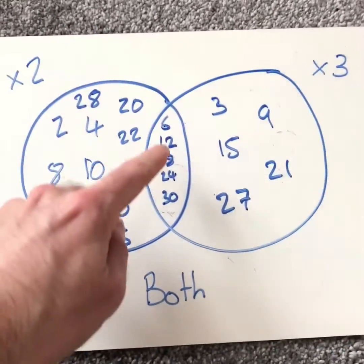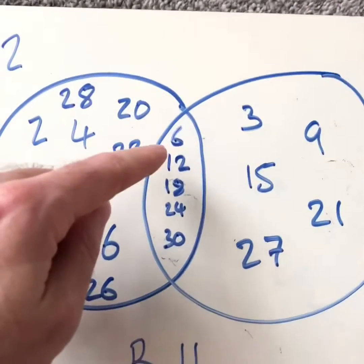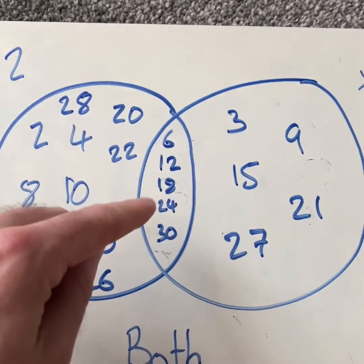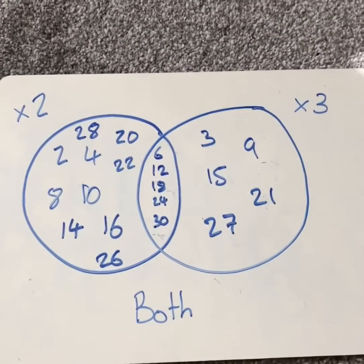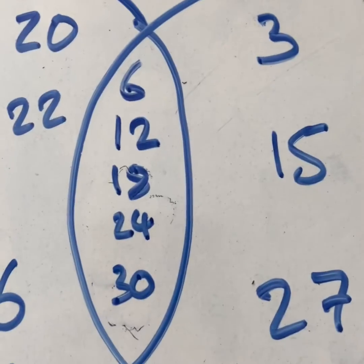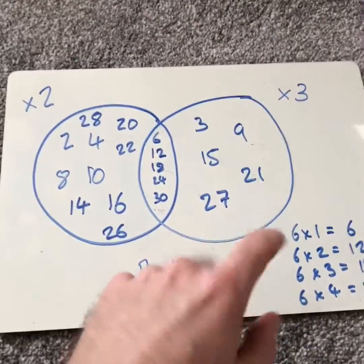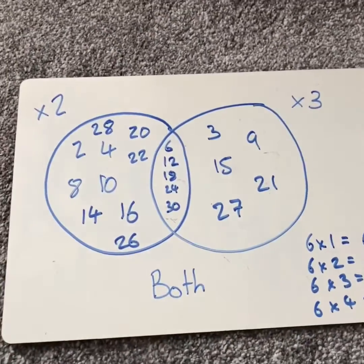But then I look at this bit in the middle and I see, hmm, is there a pattern here? I can actually look. Six, twelve, eighteen, twenty-four, thirty. That's another times table, is it not? Yeah, check it out. It's the six times table. So I can see that the two times table and the three times table are linked with the six times table.